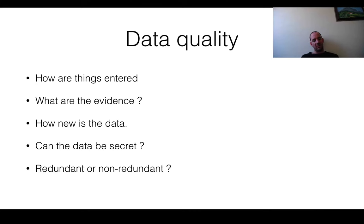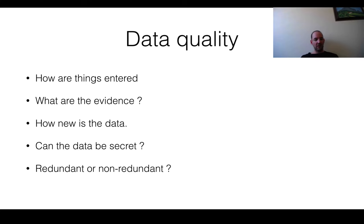One fundamental question when accessing a database is to think about the quality of the data. How are things annotated? Are there quality checks? What are the evidence codes — is it automatically annotated or manually curated? Has someone done experiments? How new is the data? It is a general problem that it's quite hard to get funding for maintaining a database — you can write a paper, publish it, and then the database dies because there are no resources to maintain it. Also, consider access rights: is the data open, or is it patented? Can you distribute it further? And is the data redundant or non-redundant? For instance, there are many identical protein sequences — are they entered once or multiple times? These are all important things to consider when choosing the right database to use.